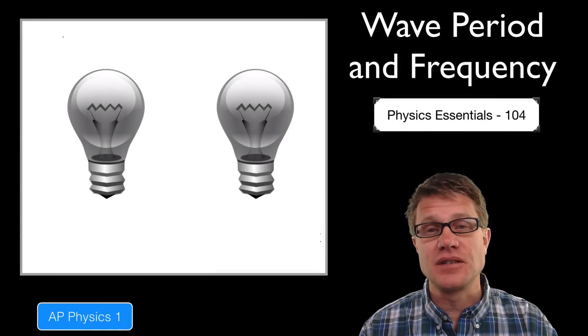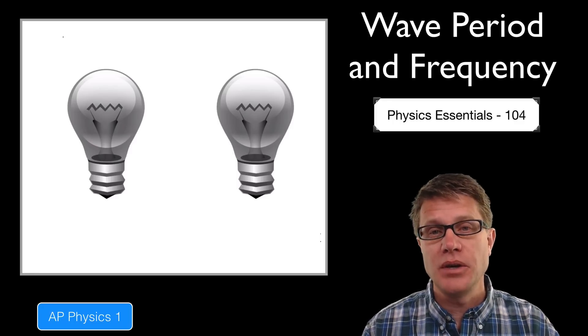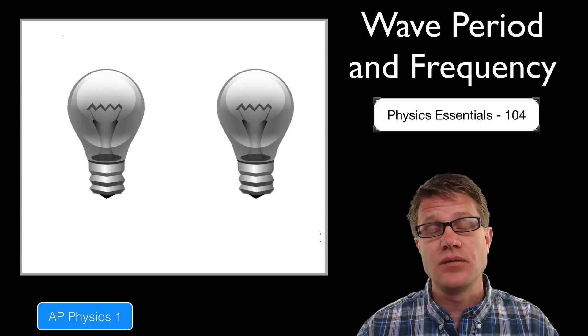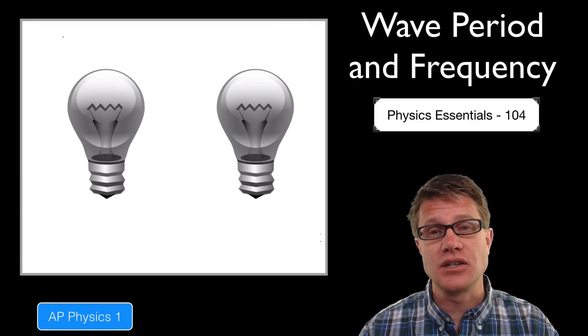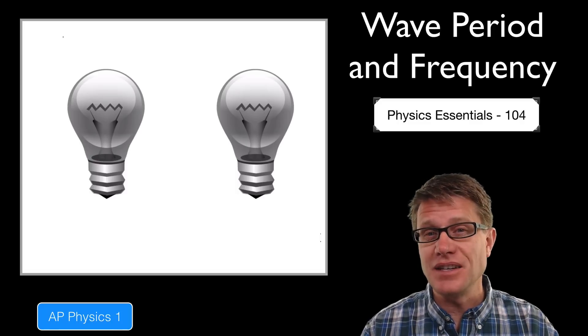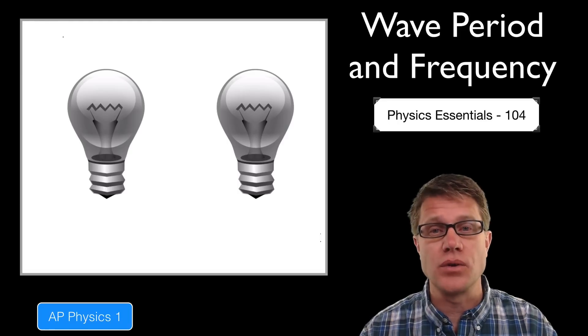Hi, it's Mr. Andersen and this is AP Physics essentials video 104 on wave period and frequency. Period is the time between oscillations in a wave, and frequency is how many oscillations or waves we have per unit time. Now it's sometimes easy to confuse frequency with the velocity of the wave, so we're not even going to start with waves. We're just going to start with some flashing lights.